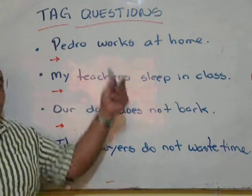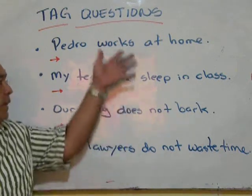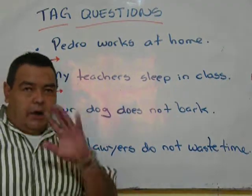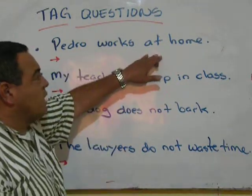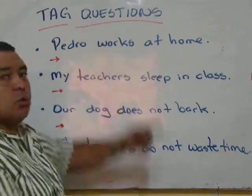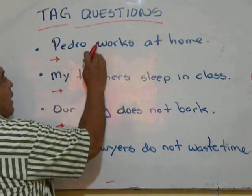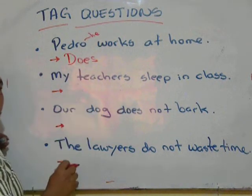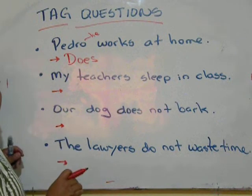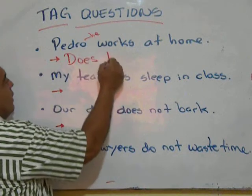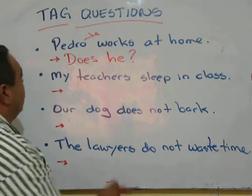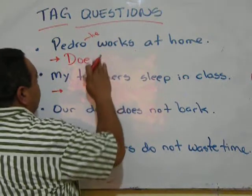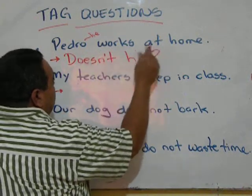Okay kids, you can pause the video right now and write this down. Let's continue with the exercise. 'Pedro works at home' — affirmative, so the tag question has to go negative. Do or does? Exactly — 'does,' because Pedro is 'he.' Whenever we talk about he, she, or it, we use the auxiliary verb 'does.' Pedro works at home, doesn't he? Next: 'My teachers sleep in class.' The tag question has to go negative, and for plural 'they.' My teachers sleep in class, don't they?